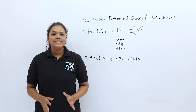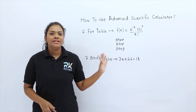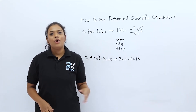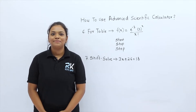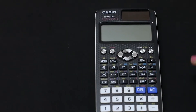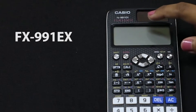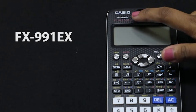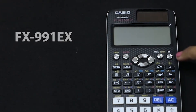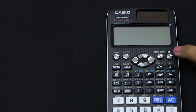Now let's practically perform all these functions on the advanced scientific calculator. This is the advanced scientific calculator fx-991EX. Let's switch it on — this is the on button in the right corner.